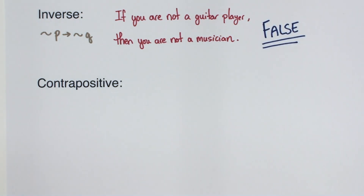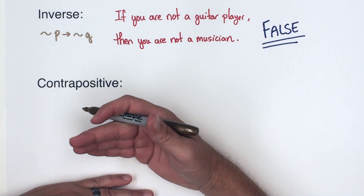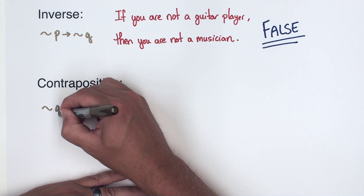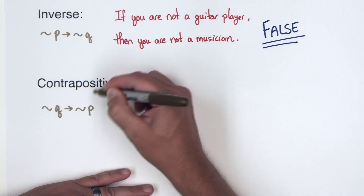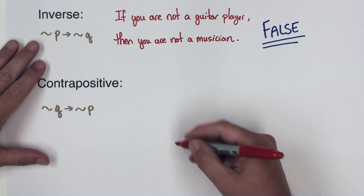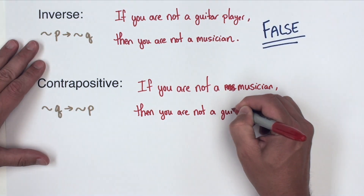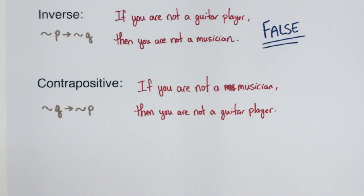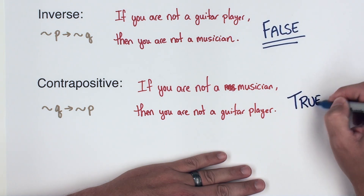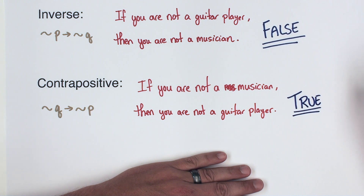Finally, the contrapositive switches and negates both: if you are not a musician then you are not a guitar player. That is a true statement — if you're not a musician, it means you don't play anything, so you're definitely not a guitar player.